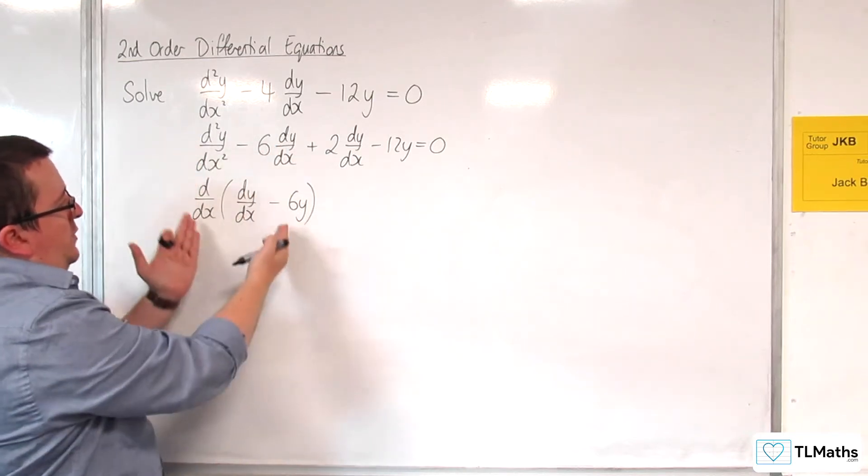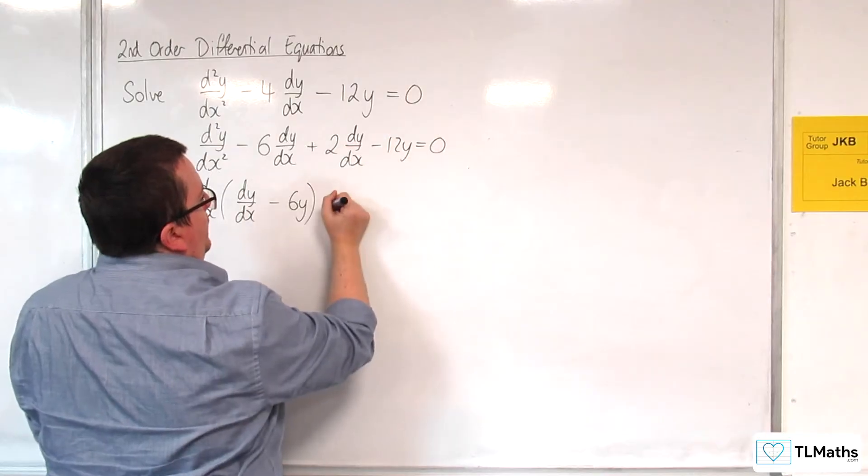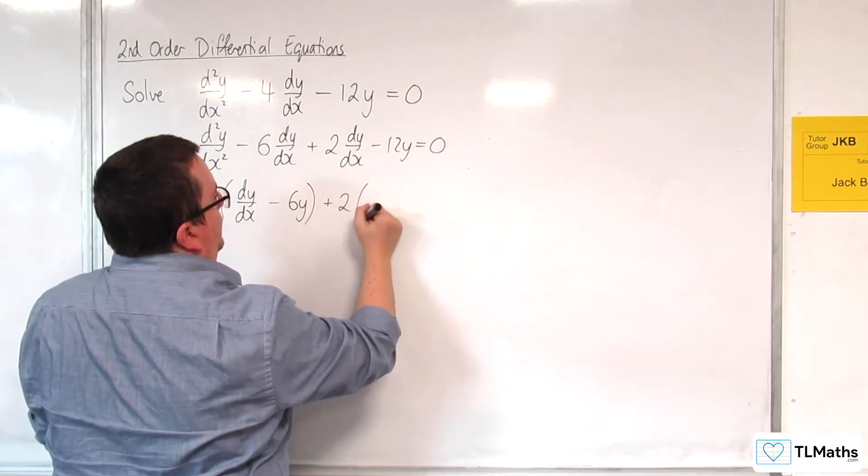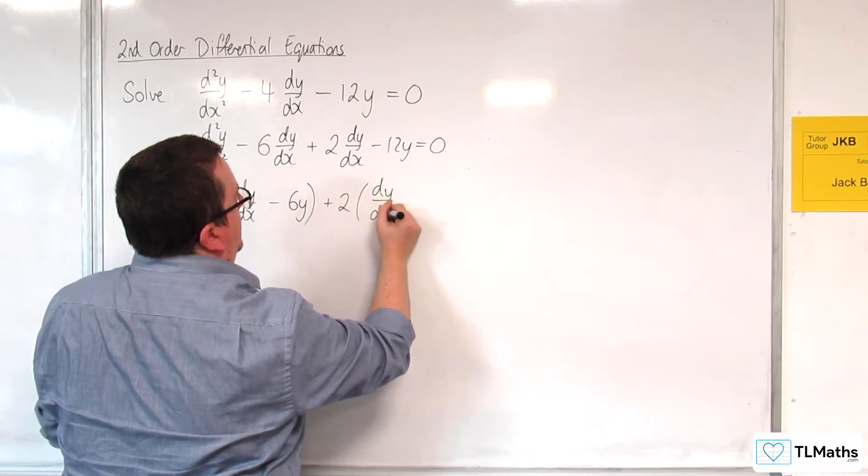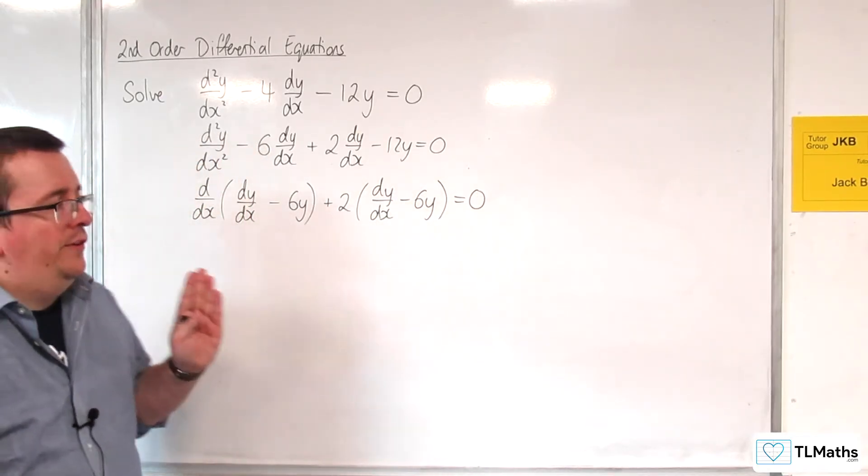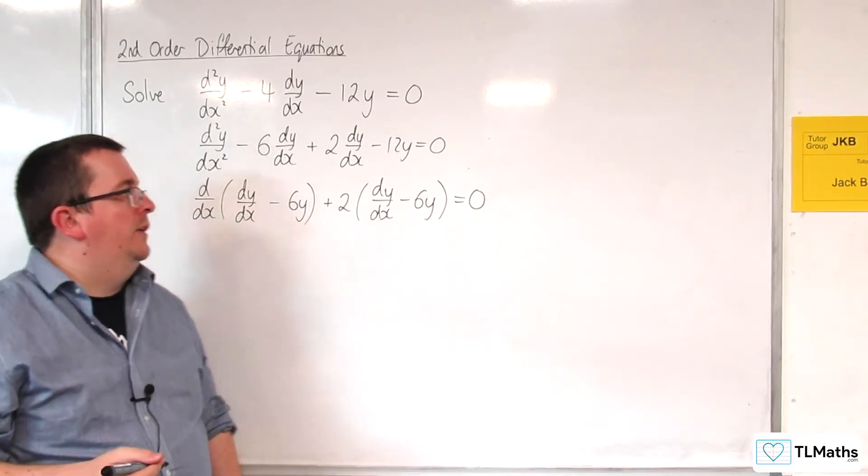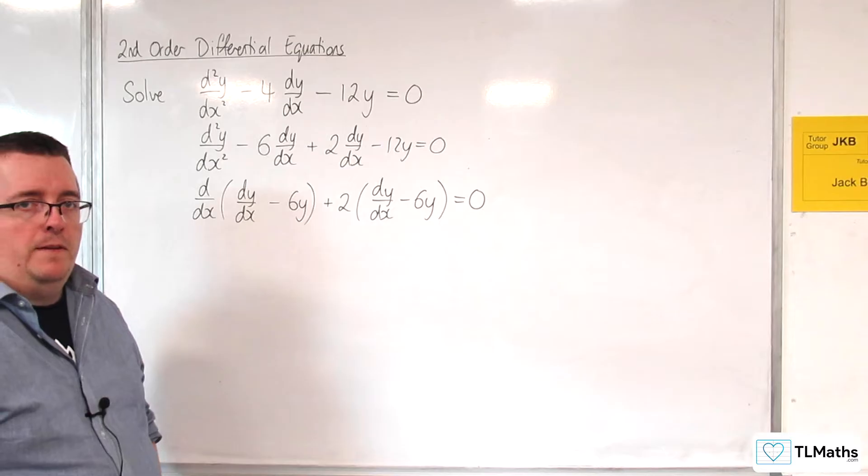These two terms, I'm just going to factor out the 2. So I'd have 2(dy/dx - 6y) = 0. Now, it's no coincidence that inside both of these brackets, I have dy/dx - 6y.